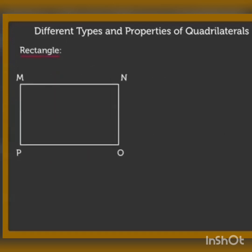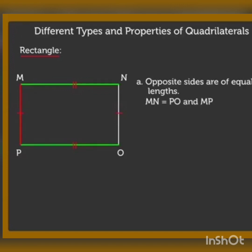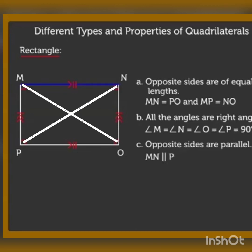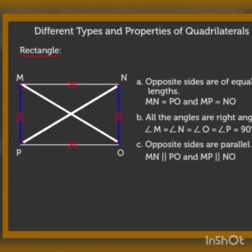Next, rectangle. Here also, the sum of the interior angles is 360 degrees. Opposite sides are equal and parallel. All angles are right angles — 90 degrees each, summing to 360 degrees. It also has two diagonals, MO and NP, which are both equal and bisect each other.